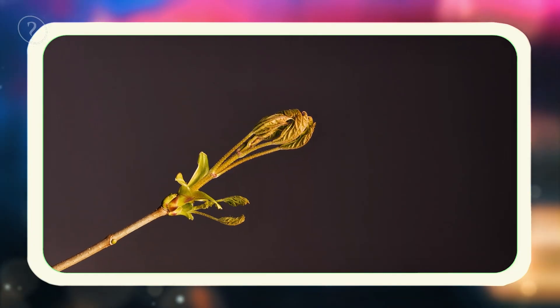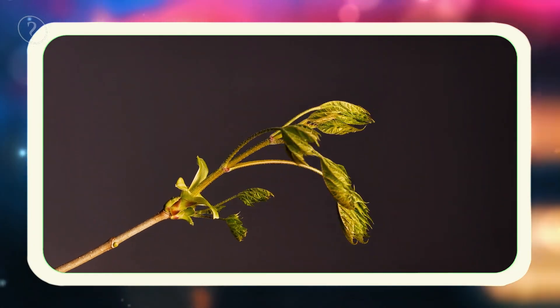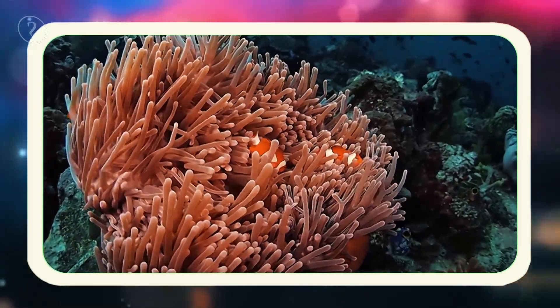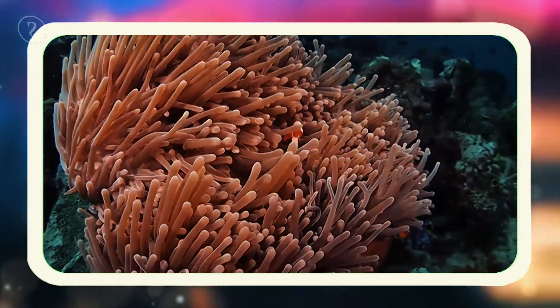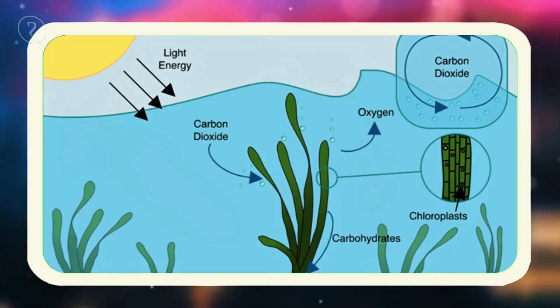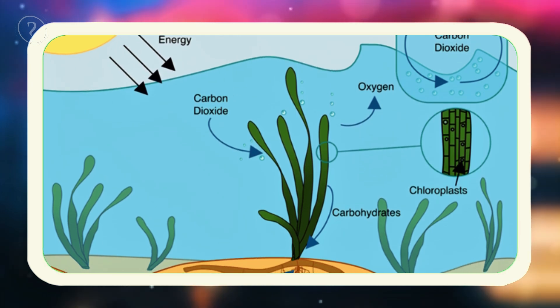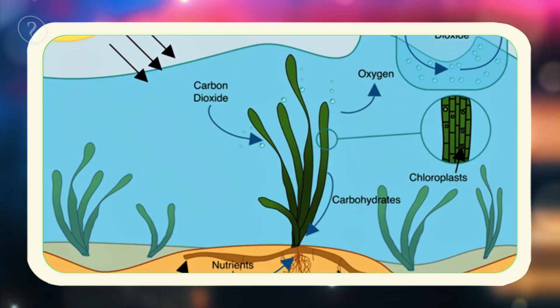Oxygen, the very breath of life, is vital for our existence. Remarkably, about half the oxygen we breathe originates from the ocean, produced by marine plants through the familiar process of photosynthesis. This process fundamentally requires sunlight. But what if sunlight wasn't the sole prerequisite for oxygen production?